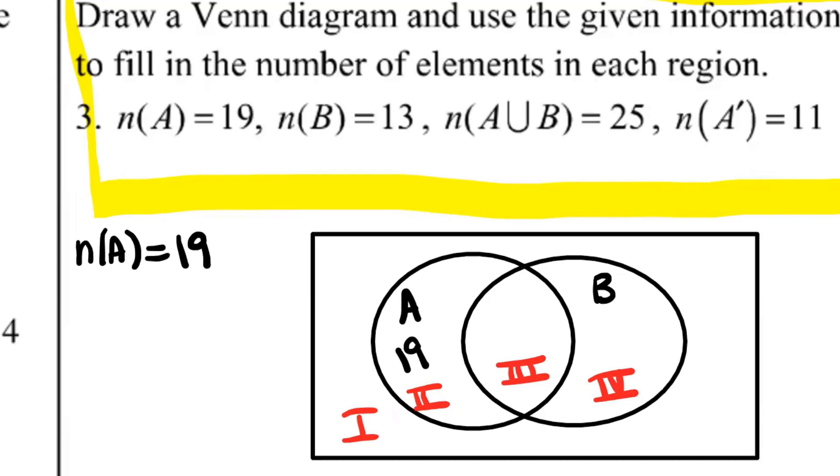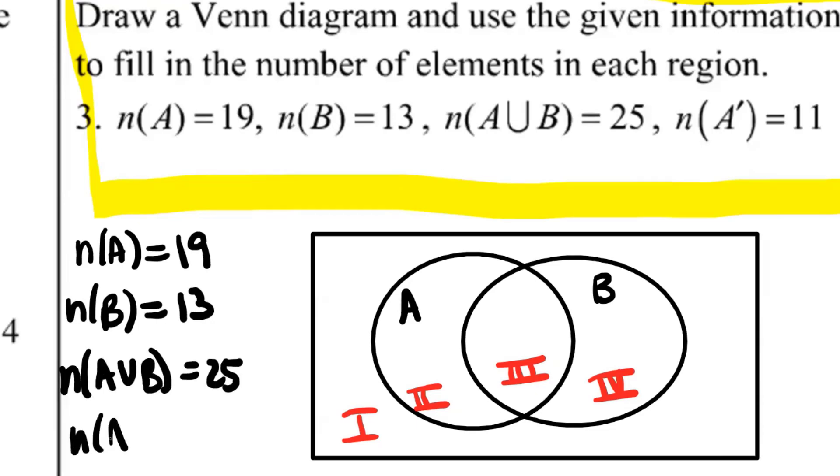You have to start with whatever information they give you that's describing exactly one region and work from there. So what I recommend is that you go through the facts that you're given, write them down. Each one is a piece of a puzzle. You go through and you identify which region or regions they're talking about.